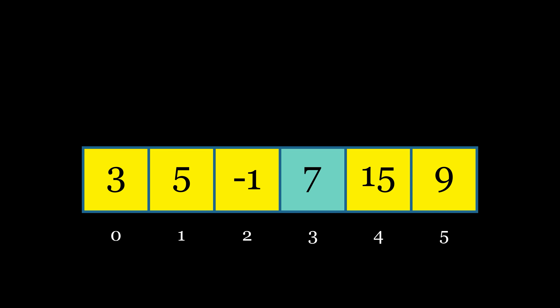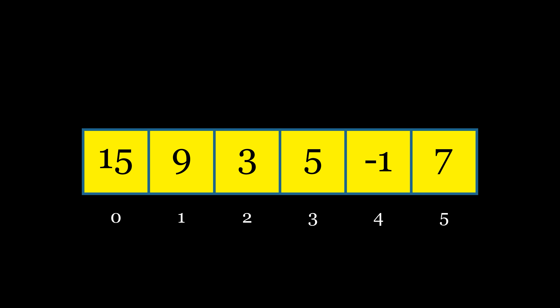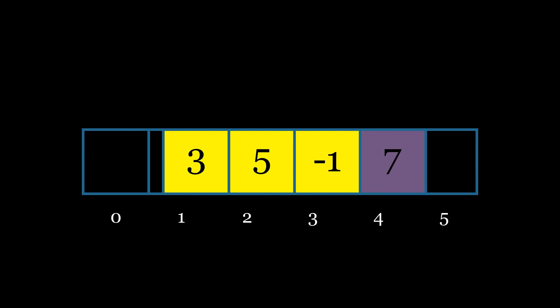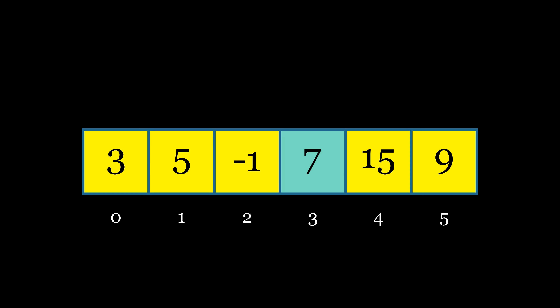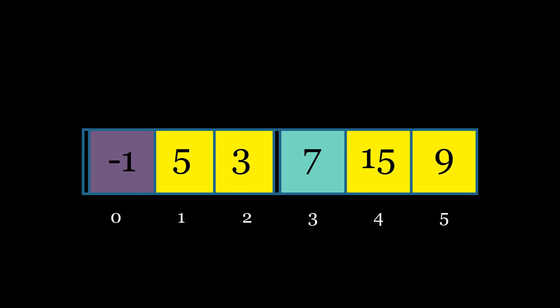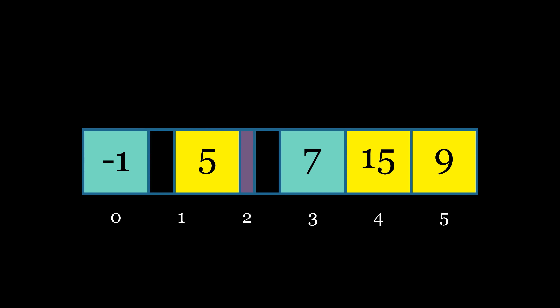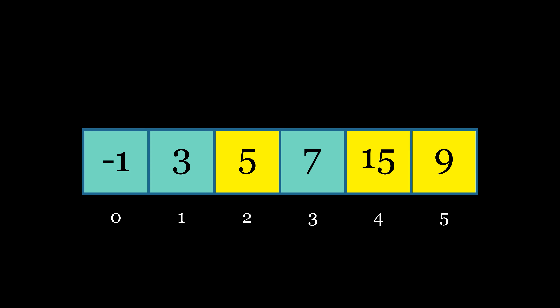The pivot now sits in its correct sorted place within the array. Note that the elements to the left and right of the pivot don't need to be in any specific order at this point — the partitioning step only ensures that all smaller elements are on the left and all larger elements are on the right, but they aren't necessarily sorted within their respective sides yet. Now let's perform quick sort using this partitioning method. We first partition the array starting with the last element as the pivot, then recursively apply the same partitioning process to both the left and right subarrays until each subarray contains only one element — the base case — meaning the array is sorted.